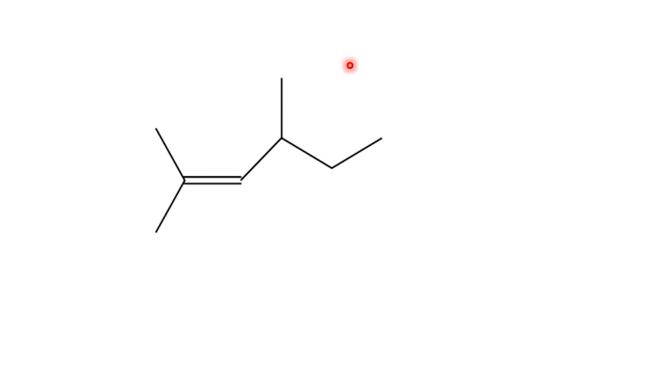Let's begin with compound A. The very first step is always to find the longest chain that contains the double bond. Here, we can count six carbons in a row. So the parent chain is hexene.